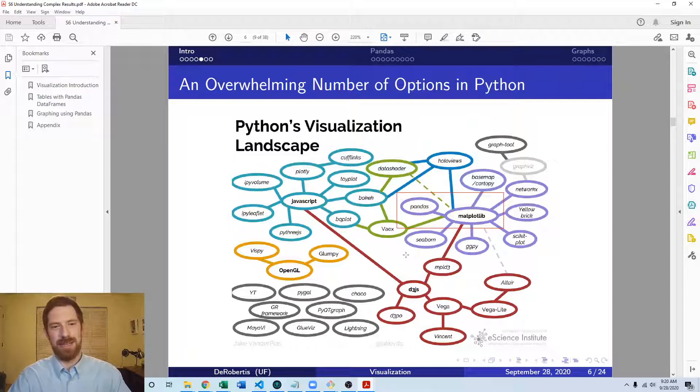I would recommend you to take a look at some of those things outside this course, such as bokeh and holoviews. These are two of the ones that I've used for interactive plots and they're very useful, but we're just going to focus on pandas and matplotlib in this class.